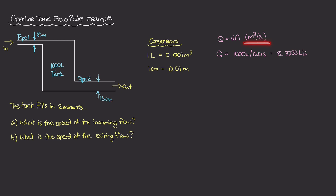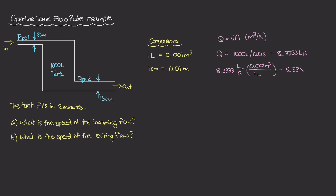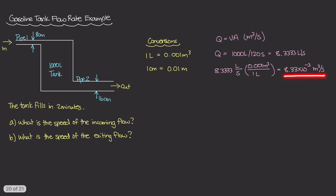We need consistent units of meters cubed per second. Converting the flow rate: 8.3333 liters per second, using the conversion that one liter equals 0.001 meters cubed, gives us 8.33 × 10⁻³ meters cubed per second. This is the volume flow rate entering the system from pipe one, and we can now use it to find the speed of the incoming flow.